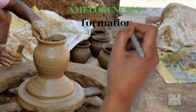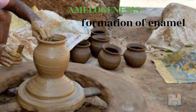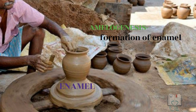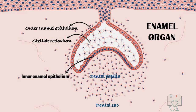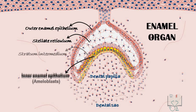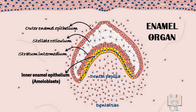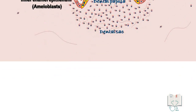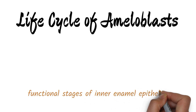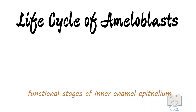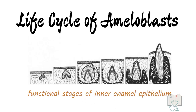Amelogenesis is the process of formation of enamel, and this enamel formation is done by ameloblasts. These ameloblasts are actually the inner enamel epithelium of the enamel organ, which are called ameloblasts only when they are fully differentiated. The life cycle of ameloblasts refers to the functional stages of the cells of the inner enamel epithelium which they pass through during tooth development and eruption.